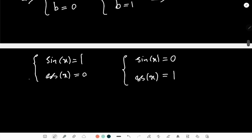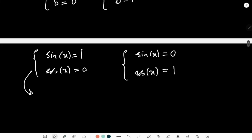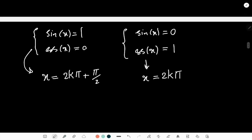But the first one, the answer you can derive from the first system is basically x = 2kπ + π/2. And the second one, it gives basically x = 2kπ. And in both cases, k belongs to integer sets.